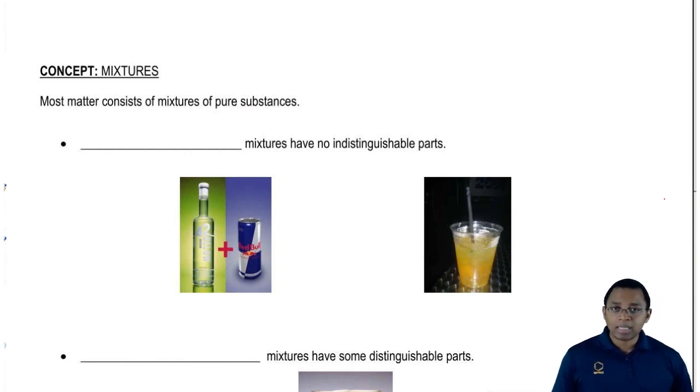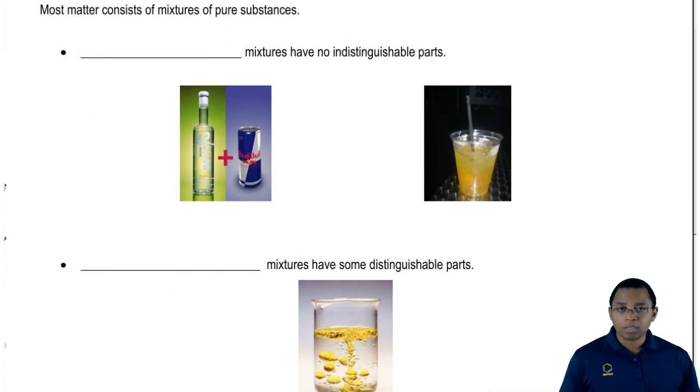Now we're going to say that most matter consists of basically mixing different things together. We're going to mix pure substances together, different elements mixed together to give us these mixtures. We're going to say that these mixtures can be broken down into two categories.